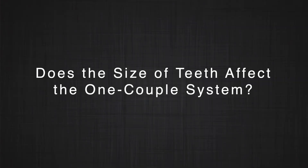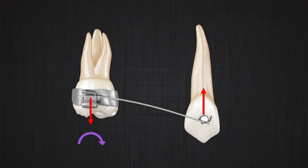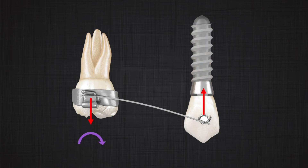Another question: is the size of the teeth on both sides of the sectional wire important? The answer is no. Whether you have a very strong canine with a large root, an ankylosed canine, or even an implant, in a one-couple system the teeth connected on both sides of the wire do not impose any restriction on each other. Therefore their size does not affect the direction or magnitude of the forces that appear in the system.